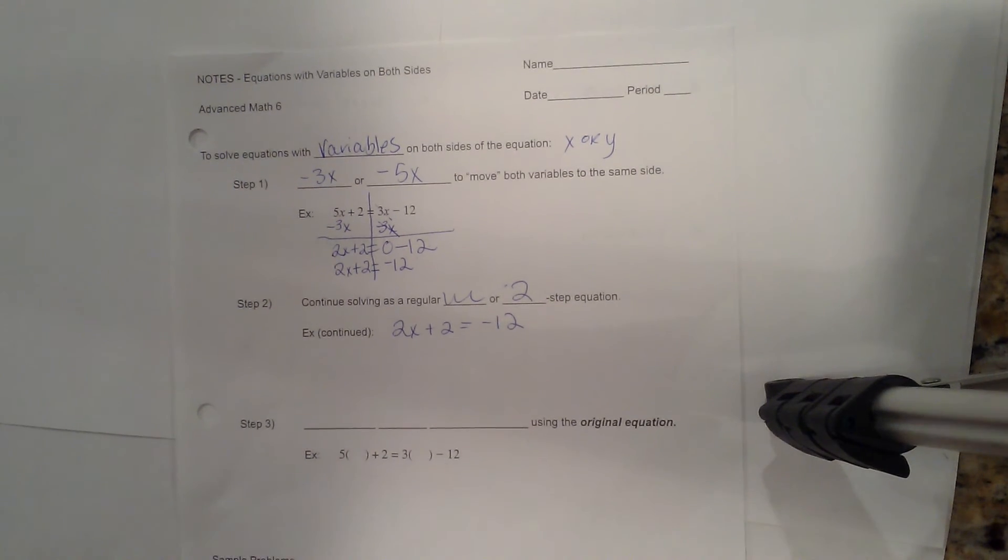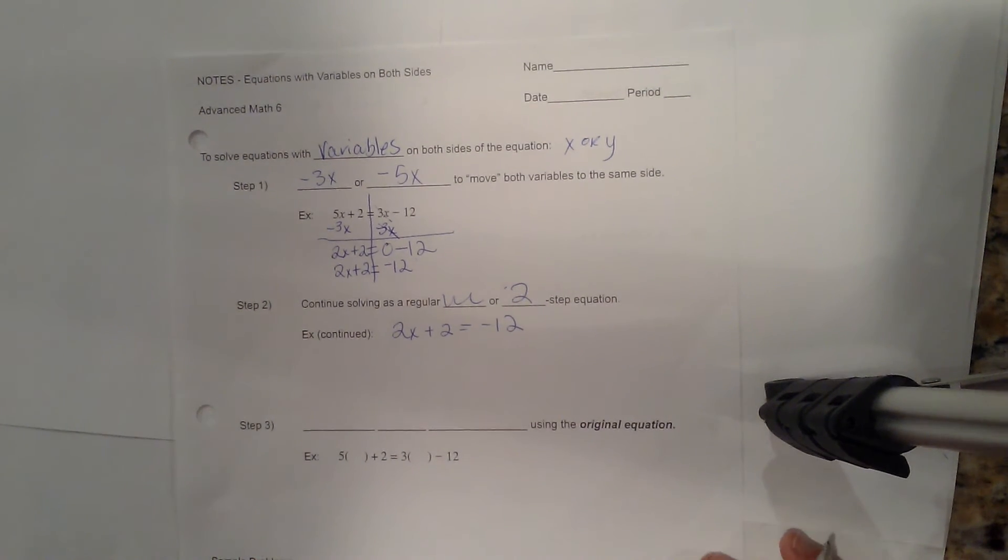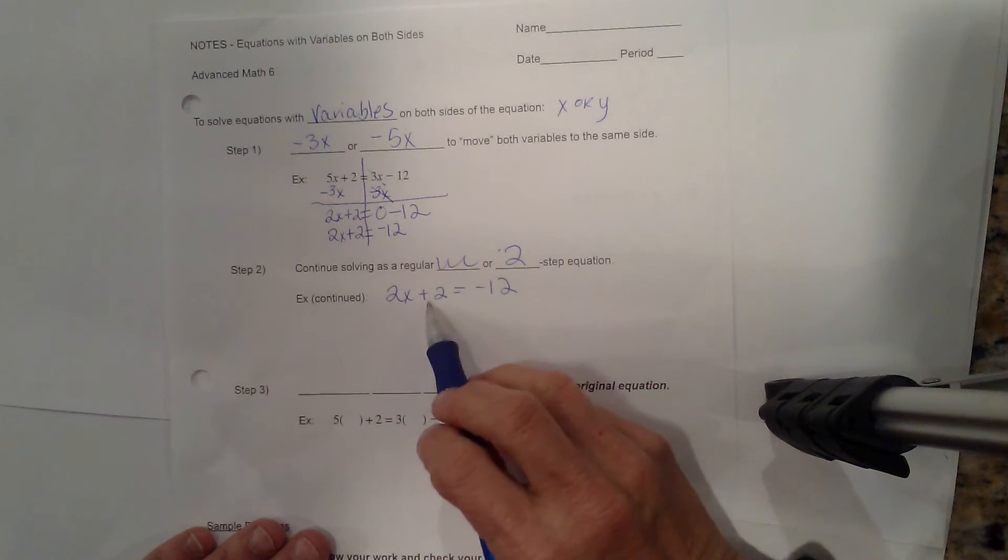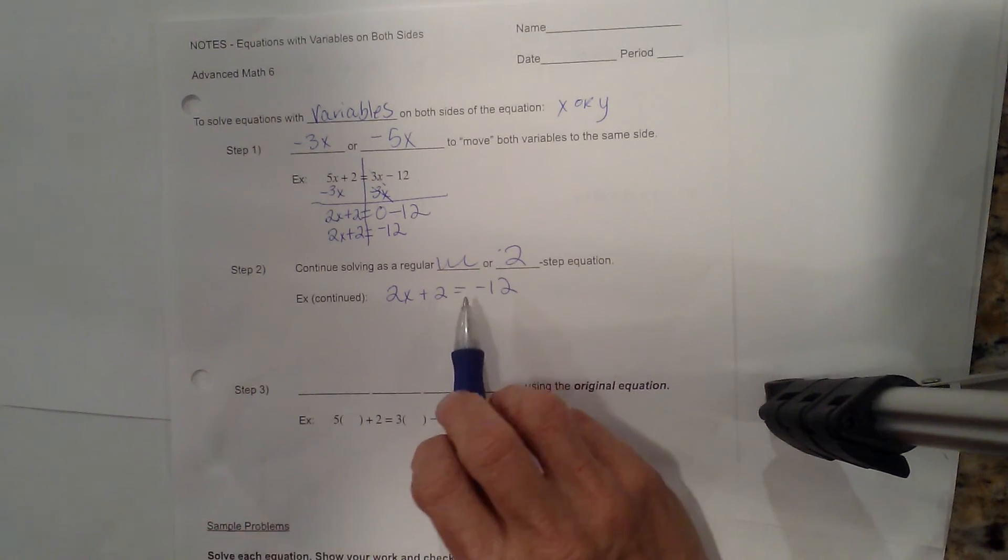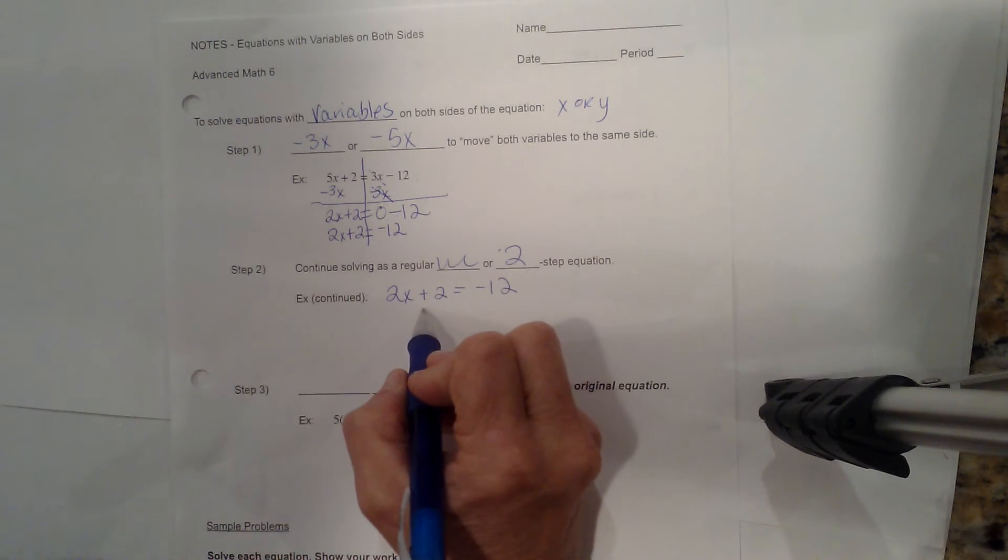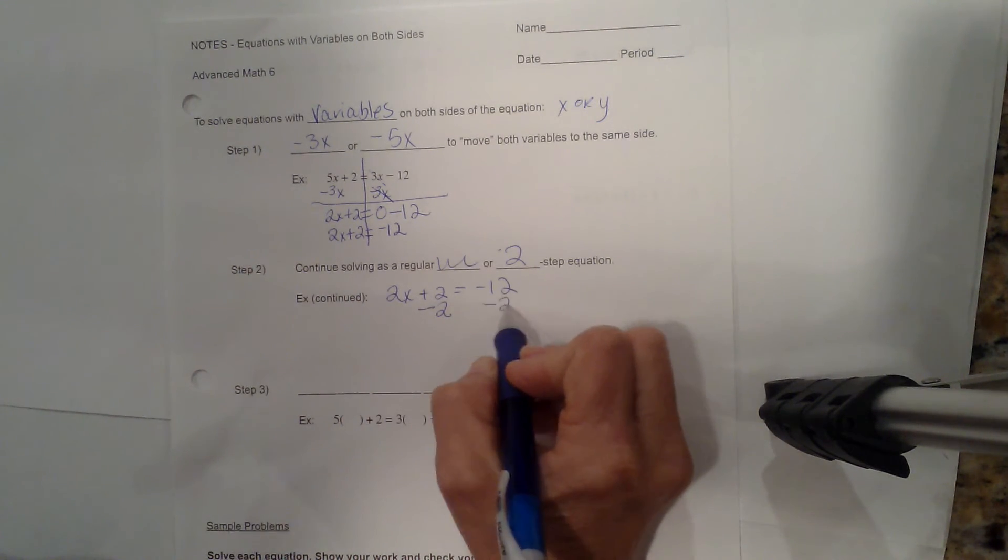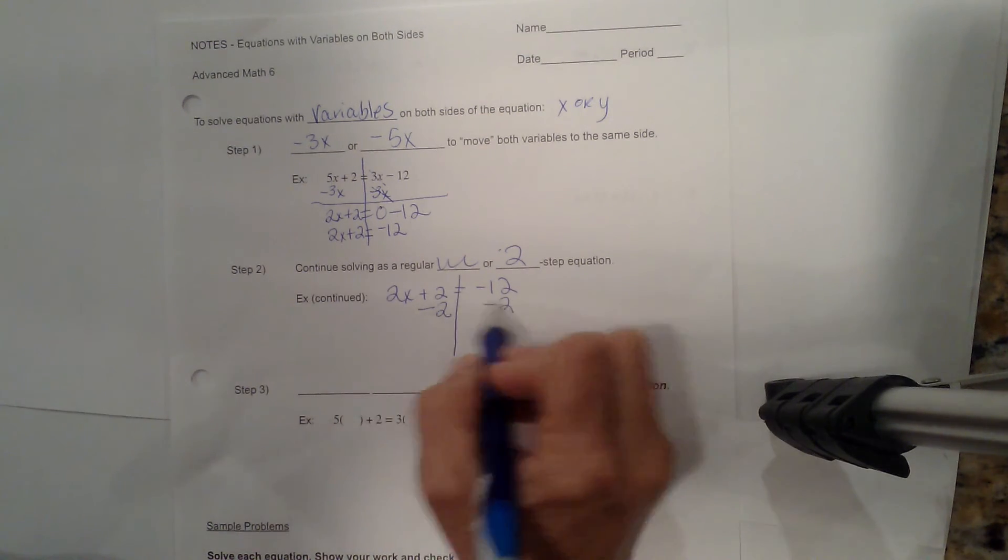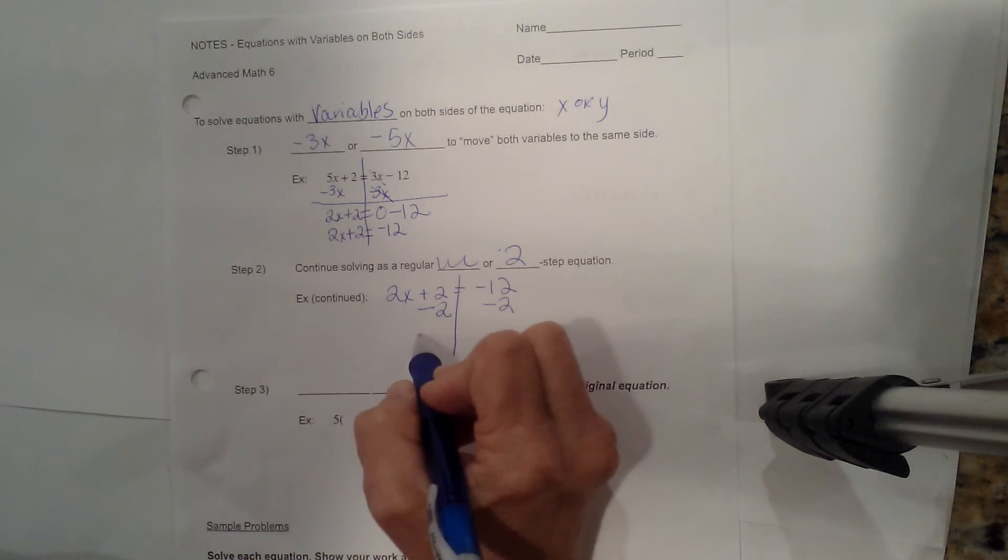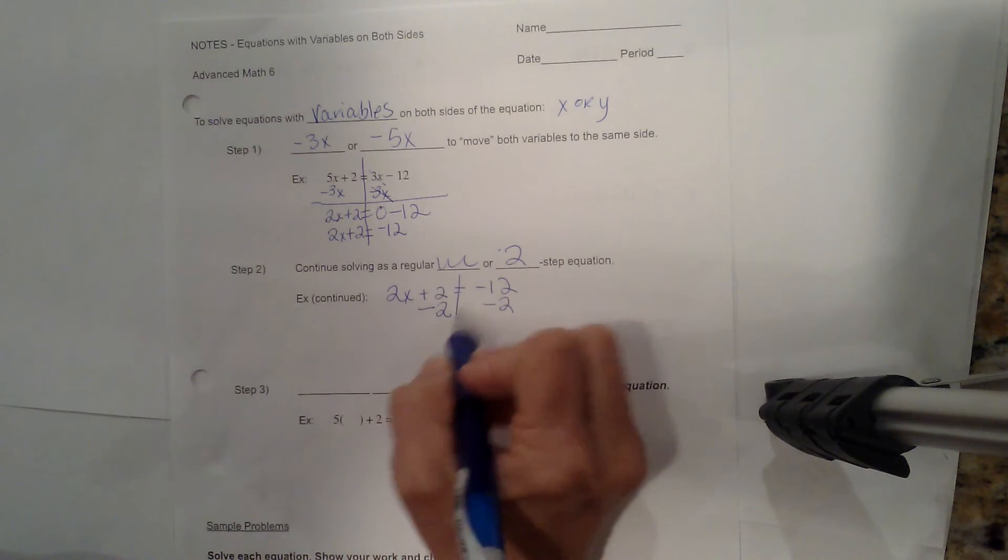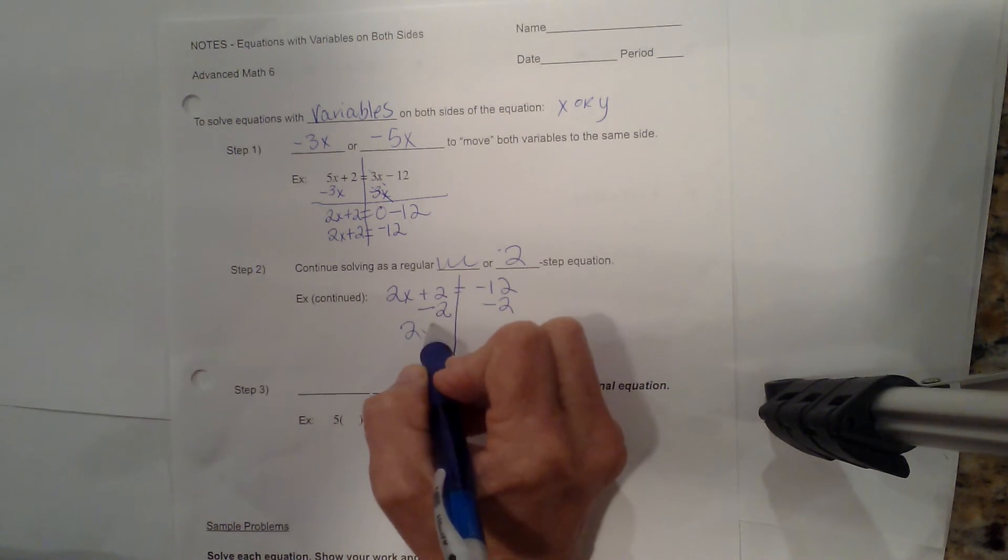Again, I want to get my like terms together. So I'm going to bring this 2 over to this side so I can get what we call our constants together, and those are numbers without variables. So I'm going to subtract 2, subtract 2 on either side and I'm going to bring down, again adding columns, I'm going to bring down my 2x.